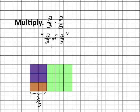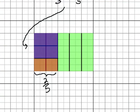So now this purple area represents two-thirds of two-fifths. Or it represents what you get when you multiply two-thirds times two-fifths.